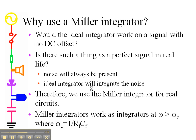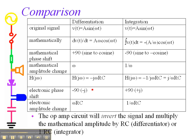With that kind of representation, we always use the Miller integrator because we never have a perfect signal. There is a comparison here for the original signal, and this is where I want to start my discussion. If the voltage looks like A times sine omega t, then mathematically the derivative looks like omega times cosine omega t. The integral becomes minus cosine omega t, 1 over omega.